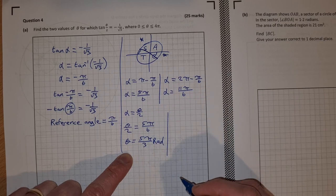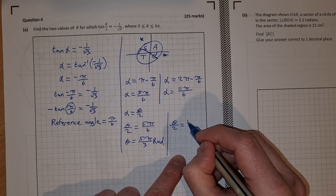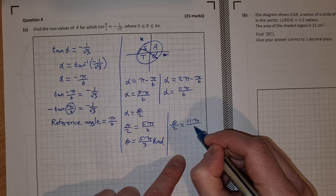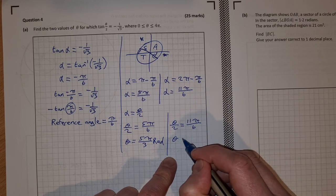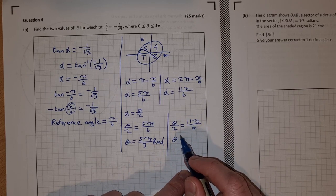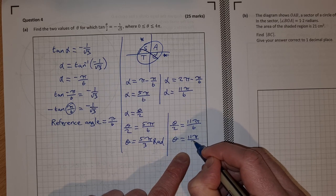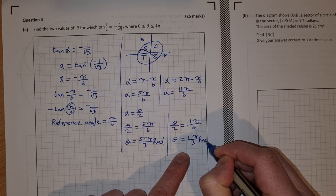And then for the other one, theta over 2 is equal to 11 pi over 6. So then multiply across by 2 to get 2 times 11 pi over 6, which is 22 pi over 6 or 11 pi over 3. And again, it's radians.